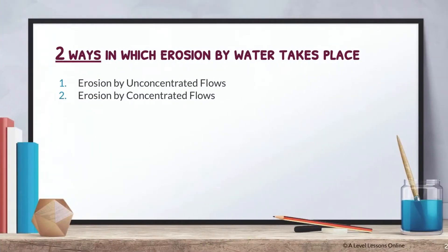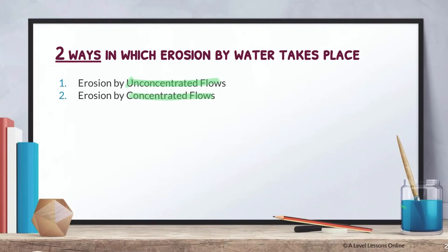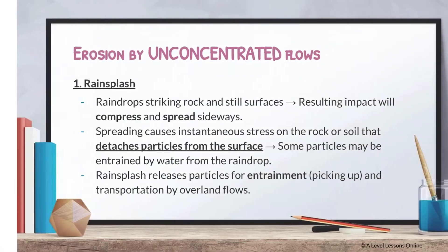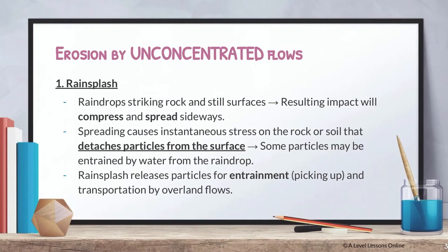There are two ways in which erosion by water takes place: erosion by unconcentrated flows and erosion by concentrated flows. You need to take note of what the different types of erosional processes are and which category they belong to.